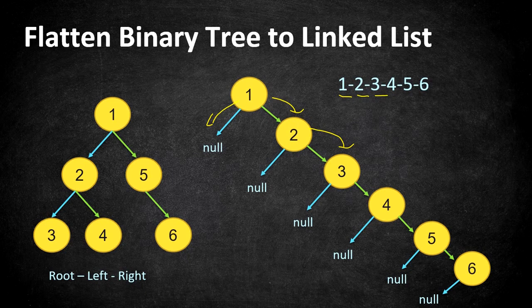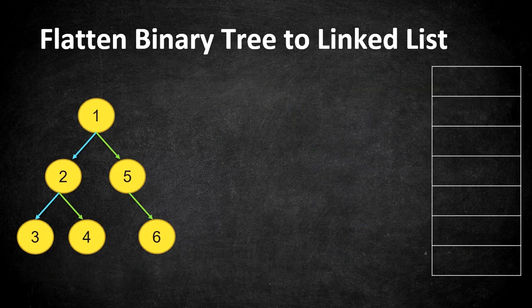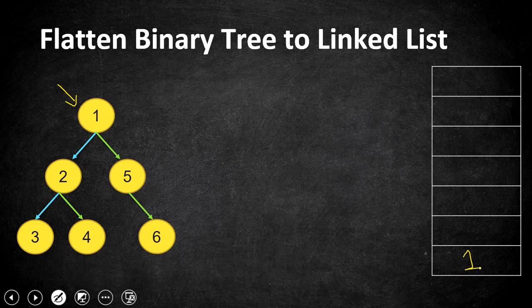If you already understand how DFS works you can jump directly to the coding part. Otherwise, we'll walk through DFS step by step. To perform iterative DFS we always need a stack. Starting from the first node, we push the root node onto our stack. We then pop it and add it to our linked list. Since the stack is LIFO, to get the left node next we push the right node first and then the left node.